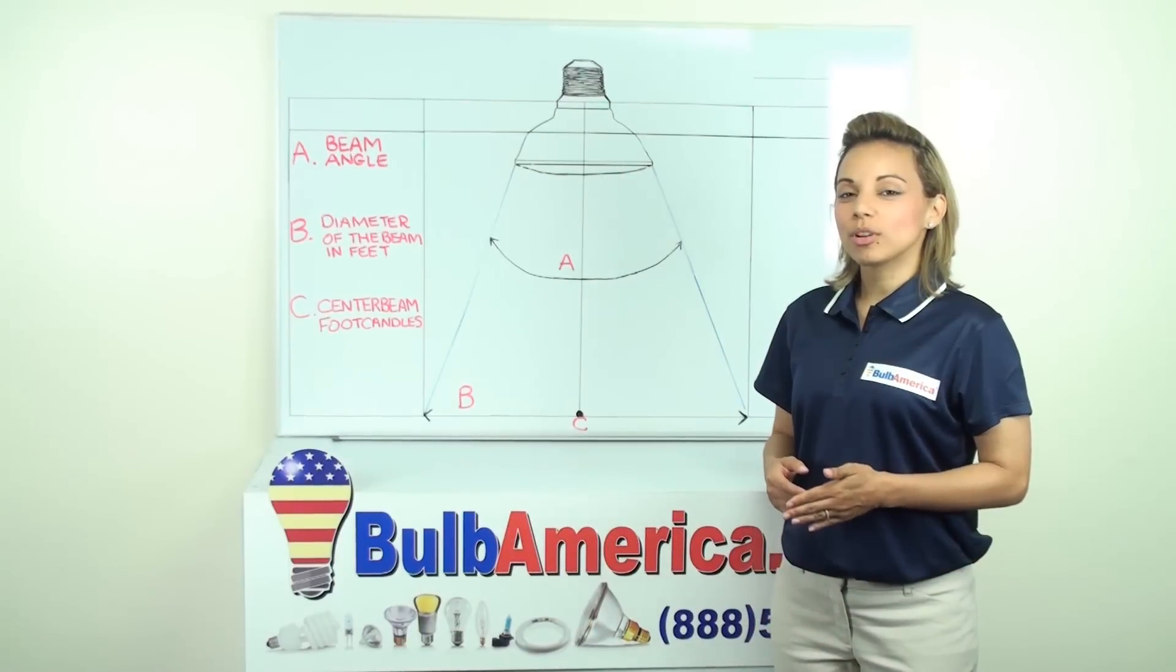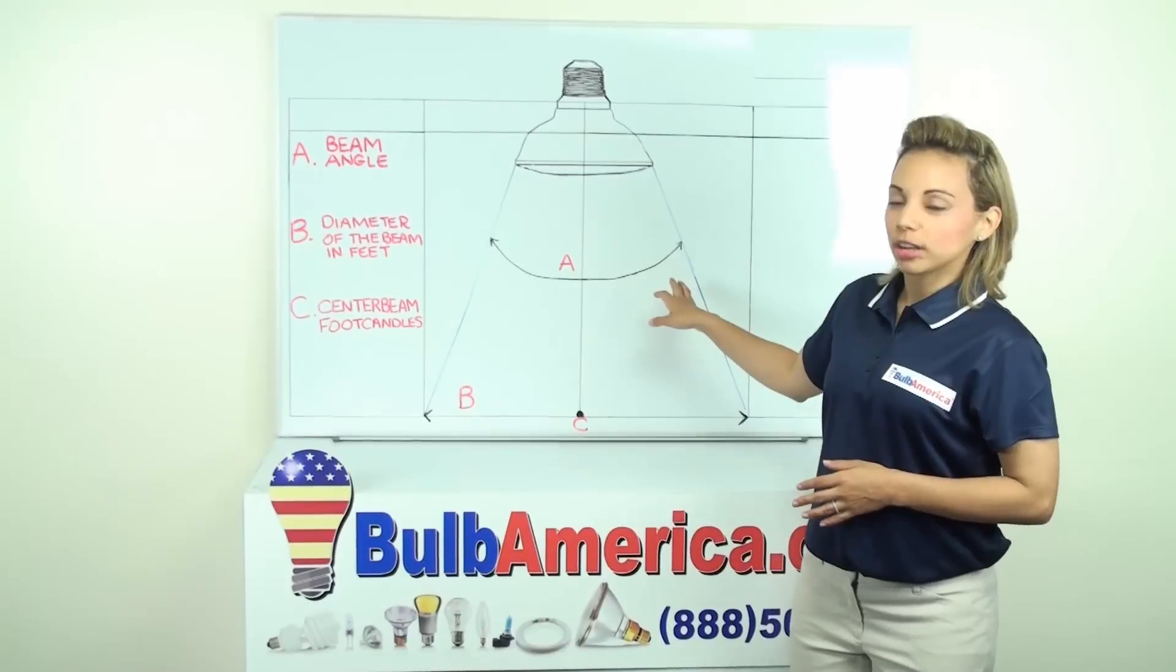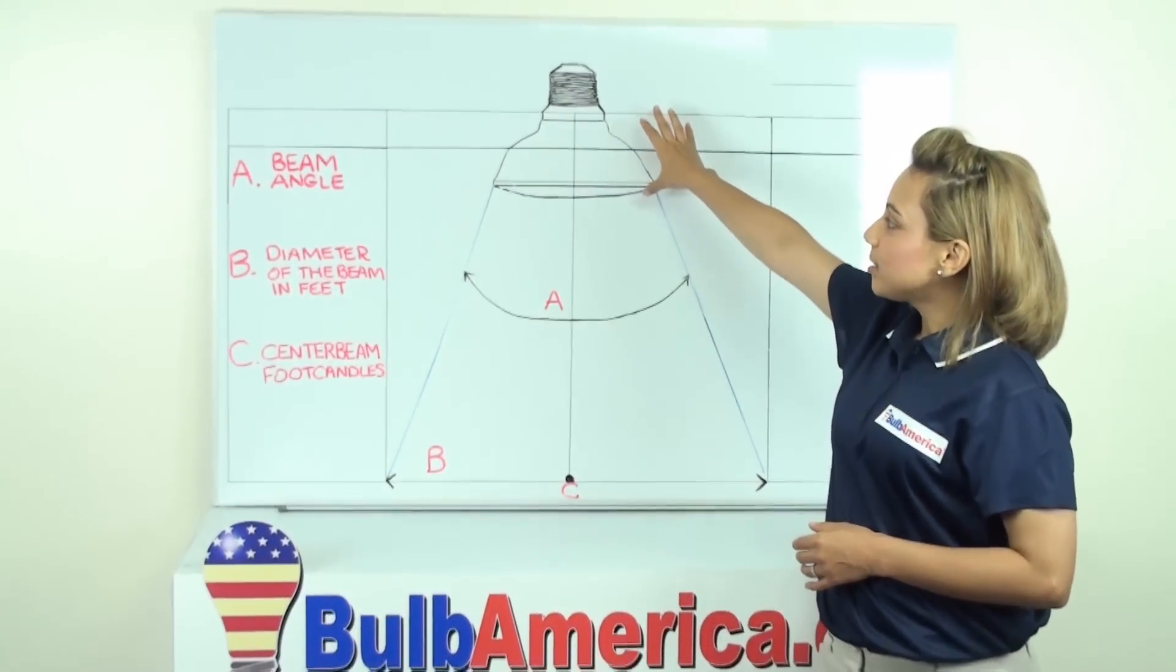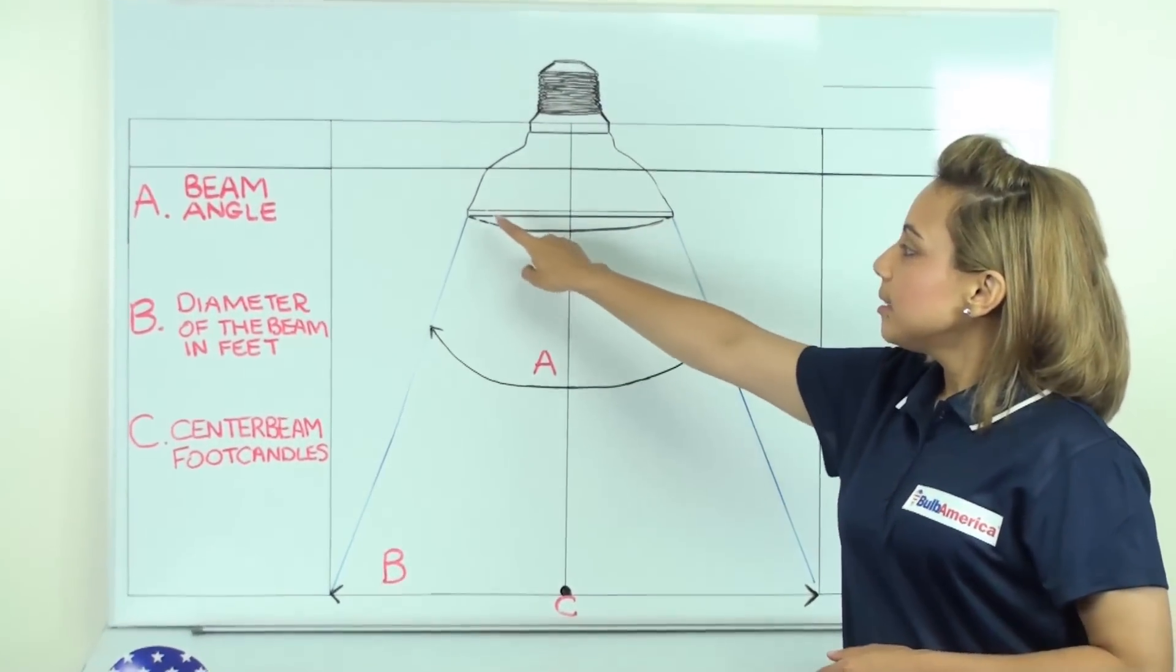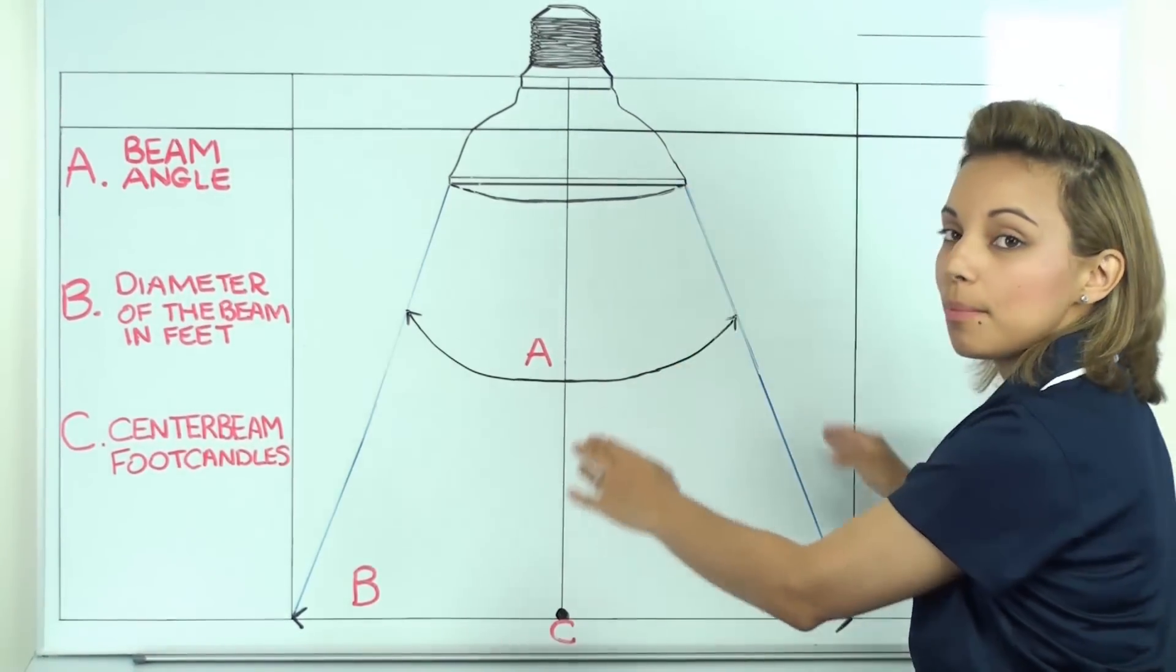So now we're going to talk a little bit more in detail about a beam angle. As you can see, we have a chart drawn here. So this is the bulb itself. Now, this is the face of the bulb. So out of the bulb is going to come a beam of light.